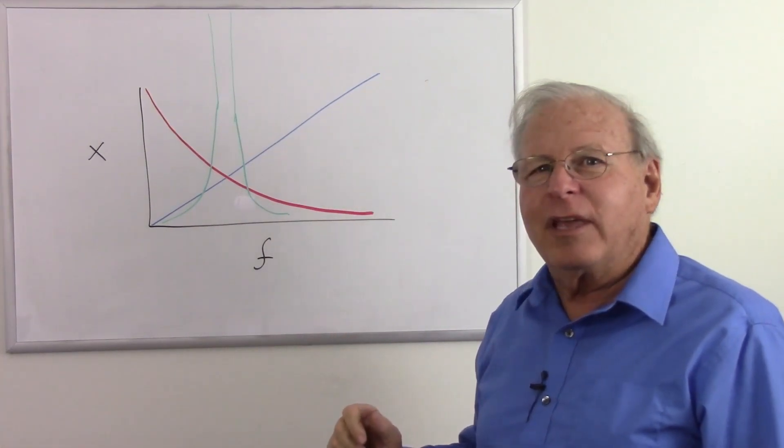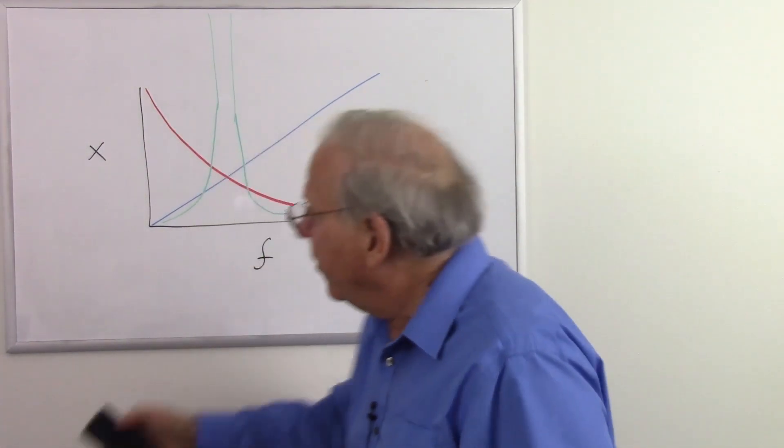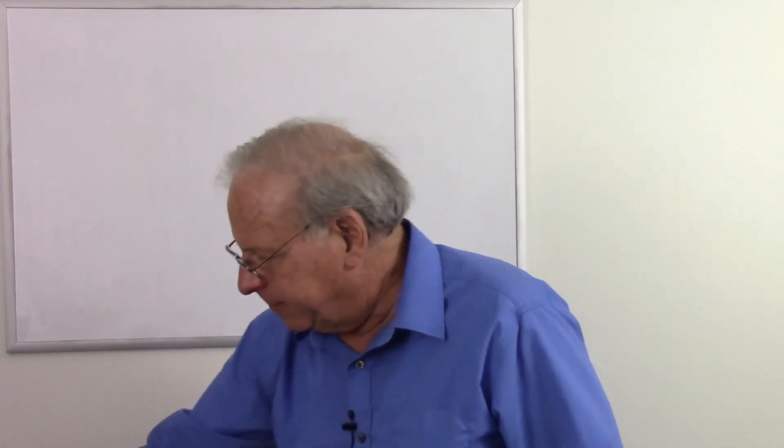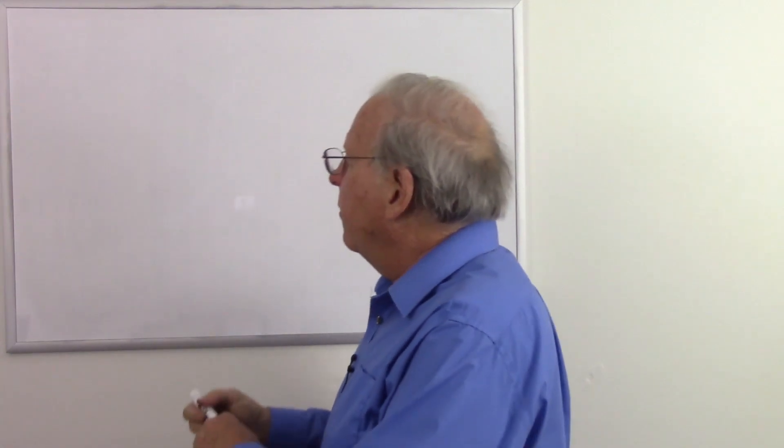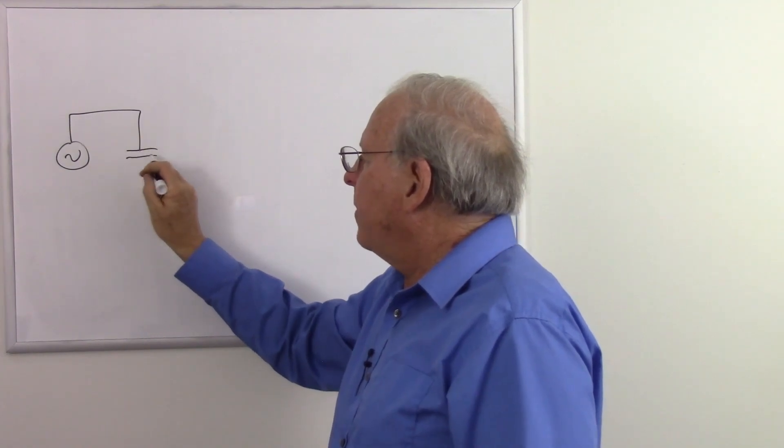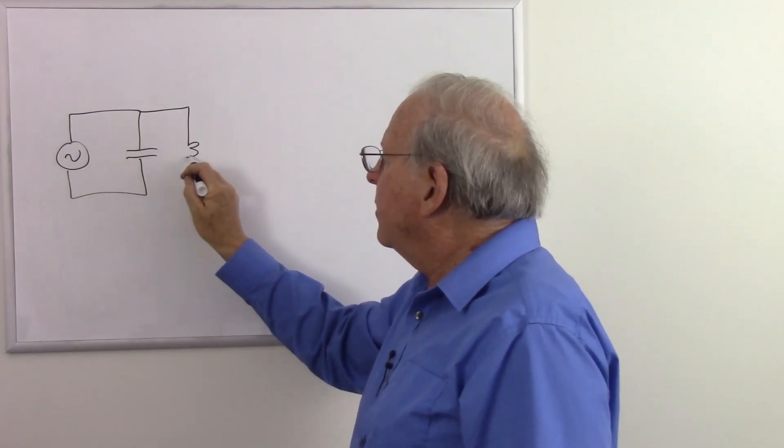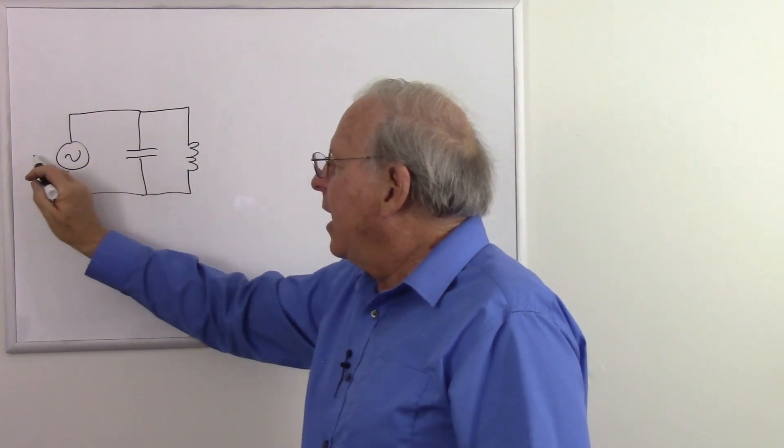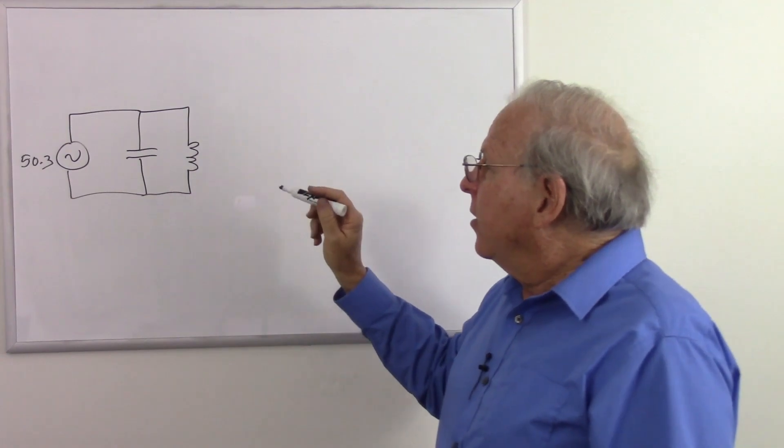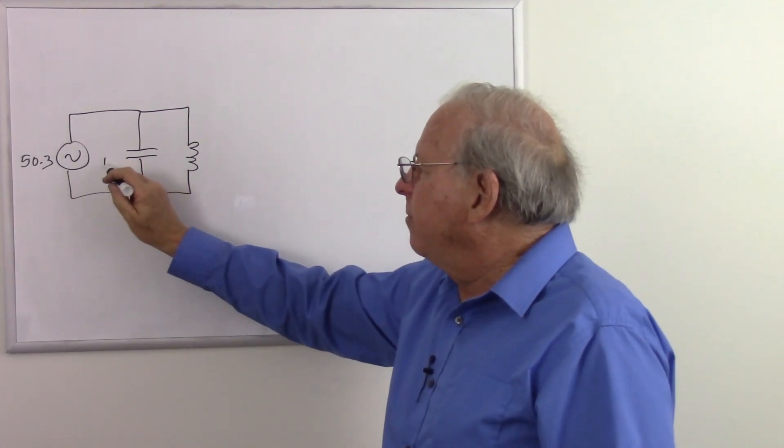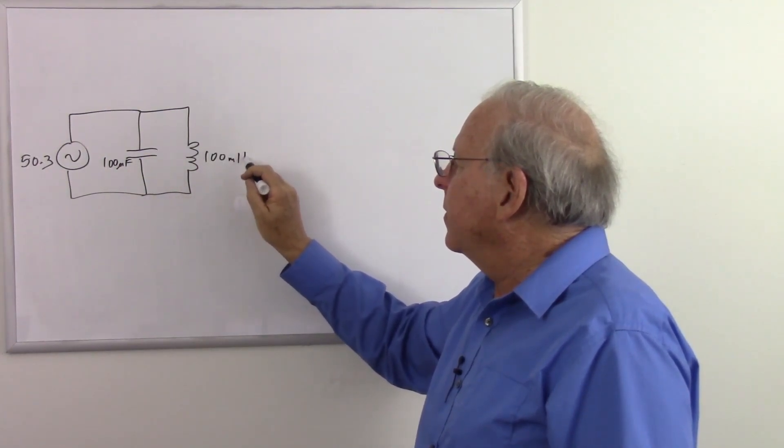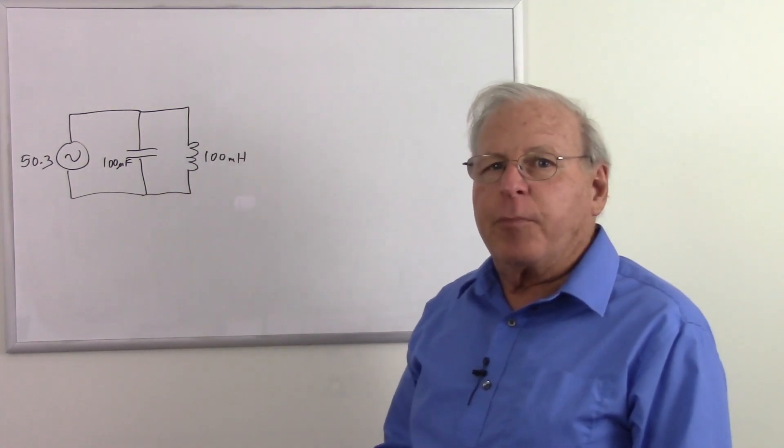But let's do the math real quick and see if that works out. So what I'm going to do is go back to that circuit, and I'm going to change the frequency. So here we have our source, our capacitor, and our inductor, and I'm going to make this 50.3 Hertz, roughly. So this is going to once again be 100 microfarads, 100 millihenries.